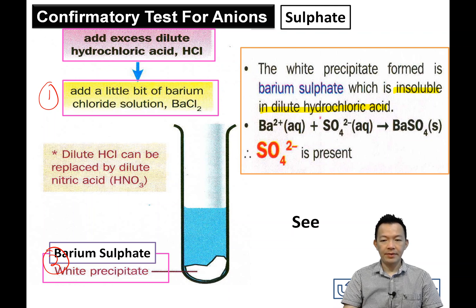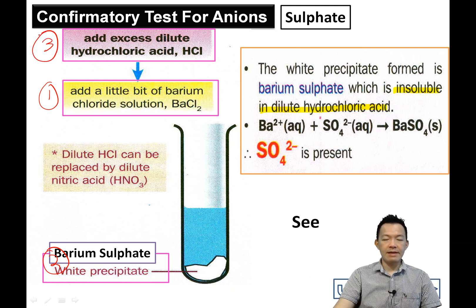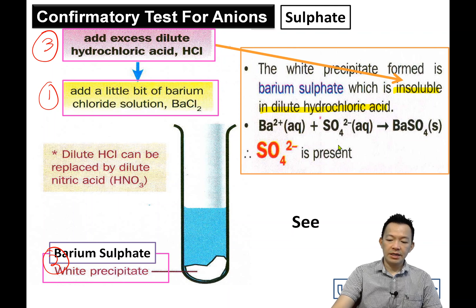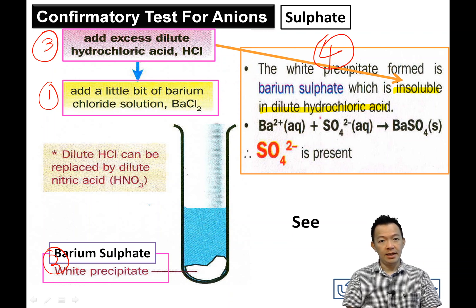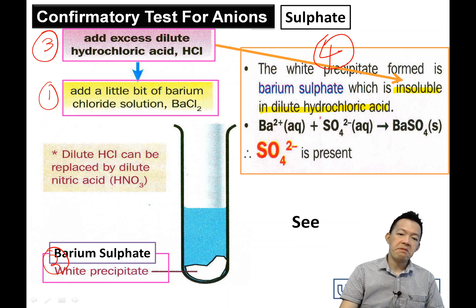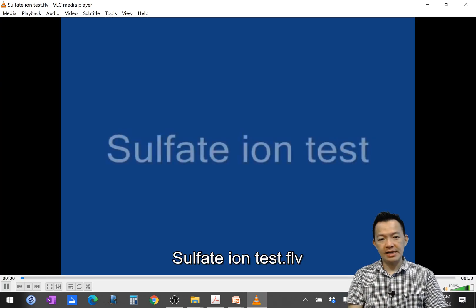And now add one more step: add excess of dilute hydrochloric acid — dilute nitric acid may also work. So add excess of dilute hydrochloric acid. What happens? The white precipitate formed is barium sulfate, which is insoluble in excess of dilute hydrochloric acid — no change observed. This is easier compared to the chloride test just now. You still need to memorize the names: barium chloride, silver nitrate.